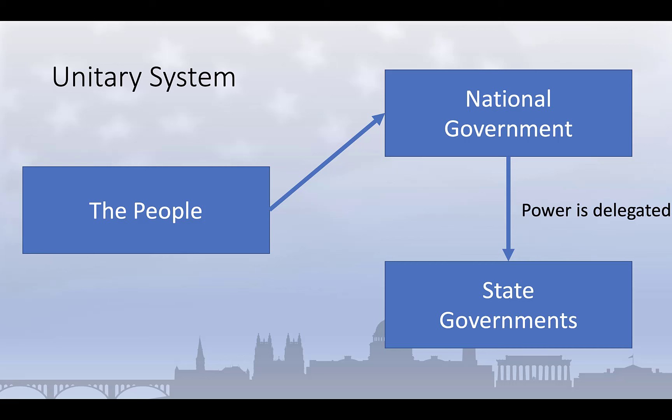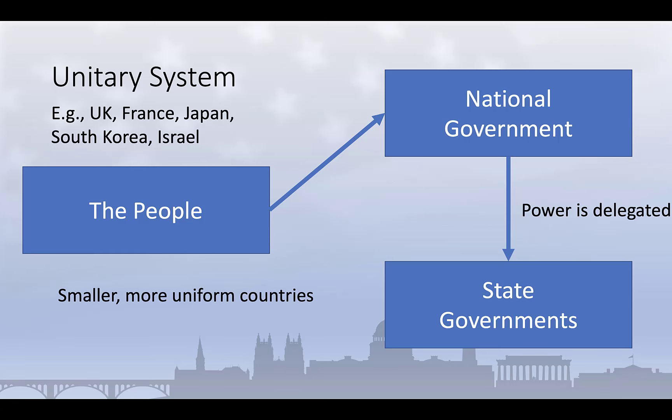Examples of unitary states include Japan, France, the United Kingdom, South Korea, Israel, New Zealand, and many many others. Unitary systems tend to function best in smaller and less populous countries, and in countries with less diverse populations. They also tend to have more centralized political systems. Most state governments in the United States operate according to unitary systems, where local and municipal governments have only those powers explicitly granted to them by the state governments. But at the national level, the US has a federal system.